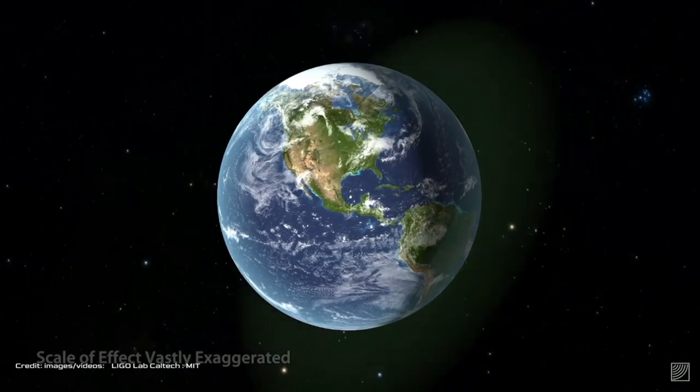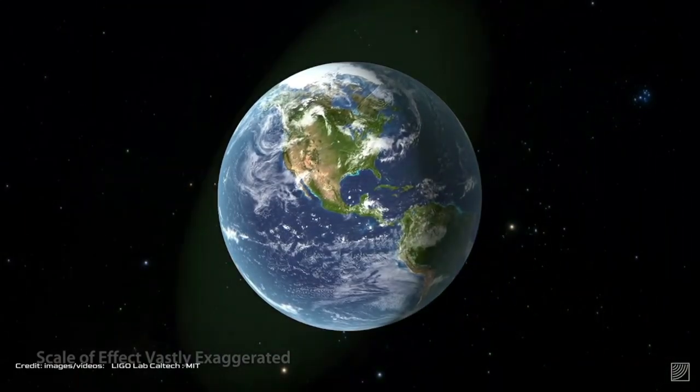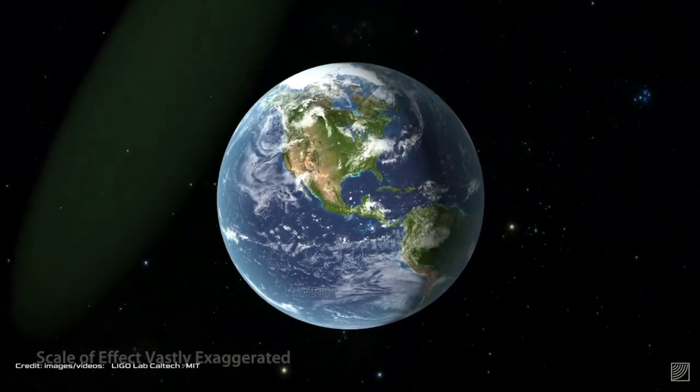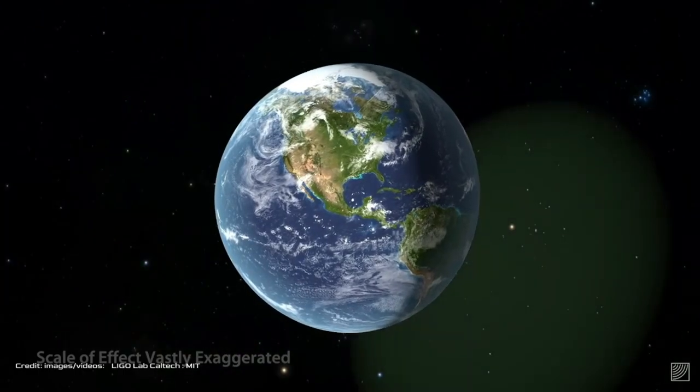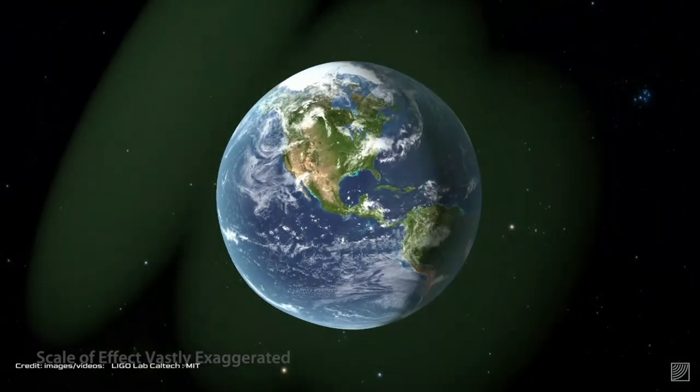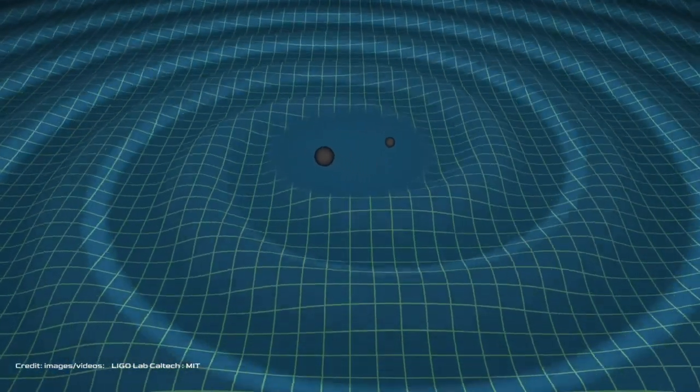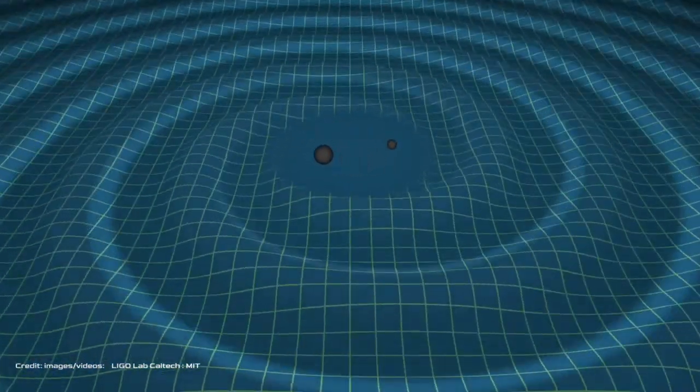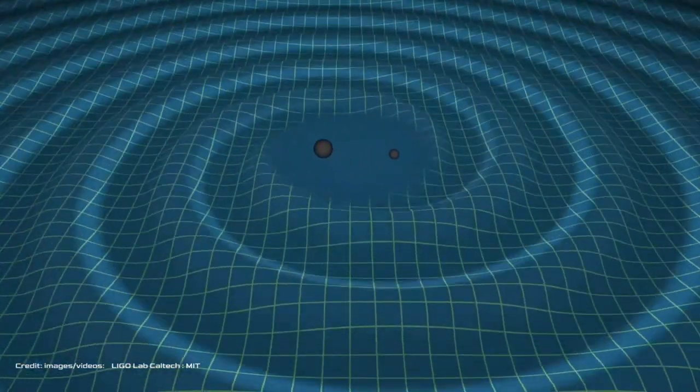They can pass through any matter without being affected, unlike electromagnetic waves, which can be blocked or reflected by matter. They have two polarizations, which describe how they stretch and squeeze space-time along different directions. They can be detected by measuring how they affect space-time and matter.